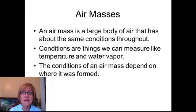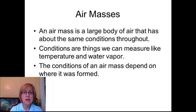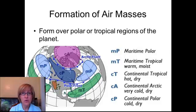Air masses are the thing that changes our weather. An air mass is a large body of air that has about the same conditions throughout. Conditions are things like temperature and water vapor — things we can measure. The conditions of an air mass depend on where it was formed. Air masses can form over land or over water, and they can also form near the equator where it's warm or further north where it's cool. These four things change the conditions inside an air mass.